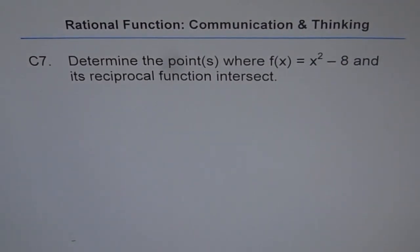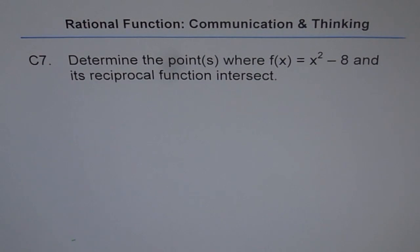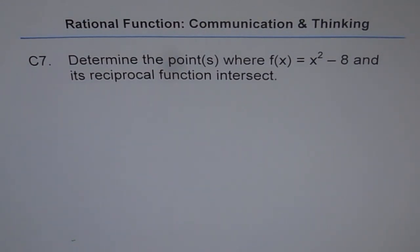Rational Function — Communication and Thinking Question, C7. Determine the points where f of x equals x squared minus 8 and its reciprocal function intersect. This is a very interesting question and students really struggle to answer it. It is a real communication and thinking problem.